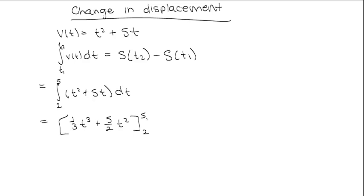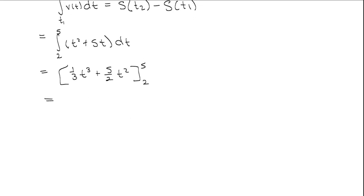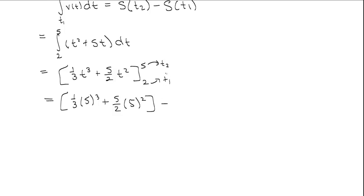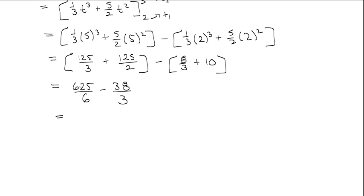We integrate from 2 to 5. This is our t2 and this is our t1, and we plug in t2 first. Plugging in 5: we get one-third times 5 cubed plus 5 over 2 multiplied by 5 squared. Then subtracting t1 plugged in: one-third multiplied by 2 cubed plus 5 over 2 times 2 squared. When we subtract, we get 625 over 6 minus 38 over 3, which equals 183 over 2, and that is also equal to 91.5 exactly.